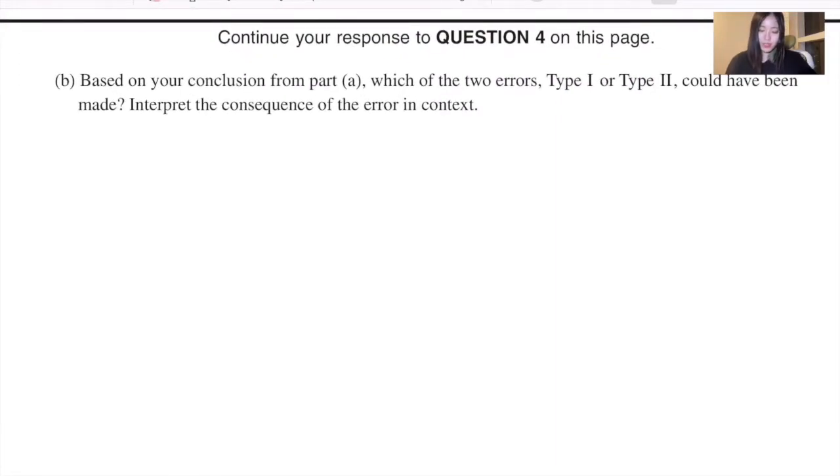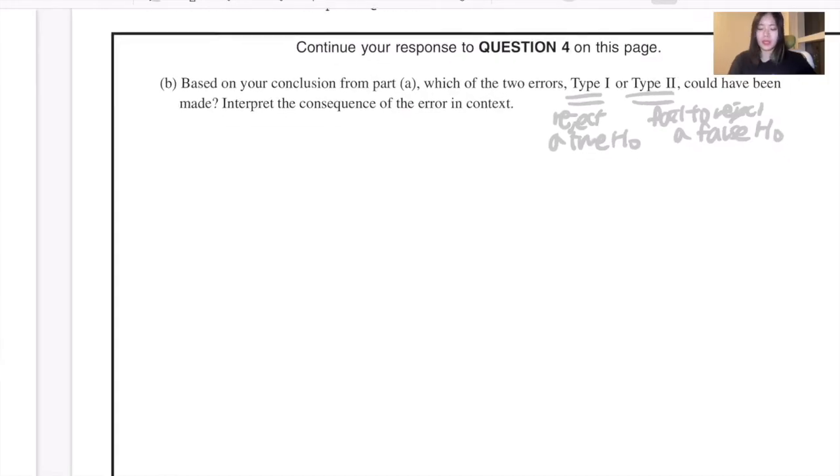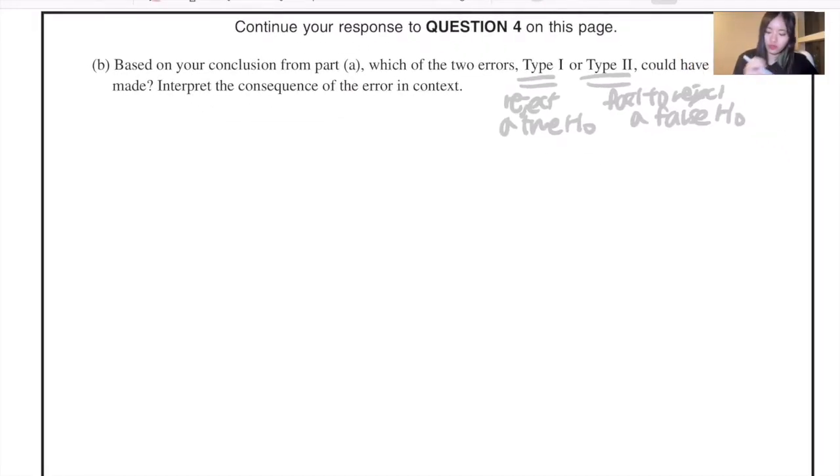Moving on to question B. Based on your conclusion from part A, which of the two errors, type 1 or type 2, could have been made? Interpret the consequence of the error in the context. So before moving on, just quickly reminding the terms. Type 1 error is conducted when you reject a true hypothesis. And type 2 error is conducted when you fail to reject or if you accept a false hypothesis. And in this question, I think it is more likely to assume that type 2 error could have occurred more likely than type 1.